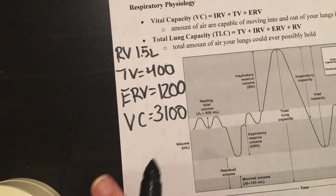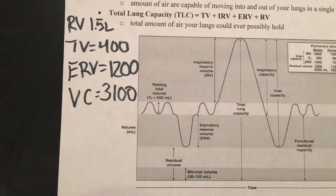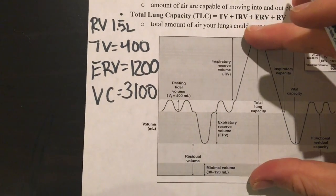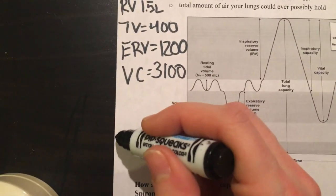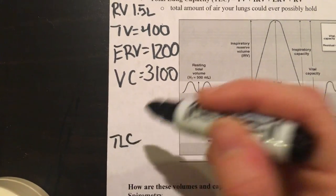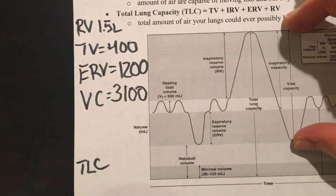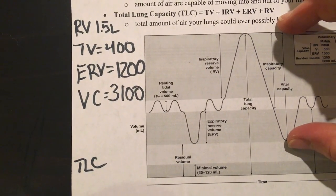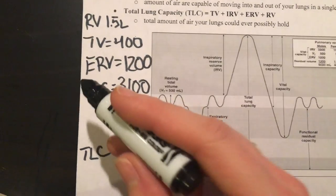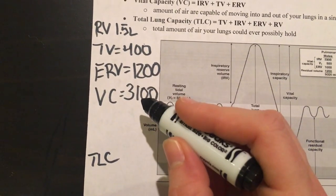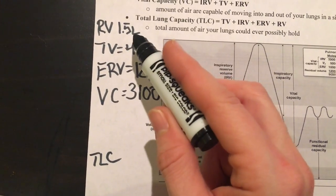There's a few things that we can calculate based on these volumes that we've taken. A very important one would be our total lung capacity, so the total amount that we can hold. Total lung capacity is going to be easily calculated by adding the vital capacity, which is your IRV or ERV and your resting tidal volume, to your residual volume which we estimated. So vital capacity plus residual volume.